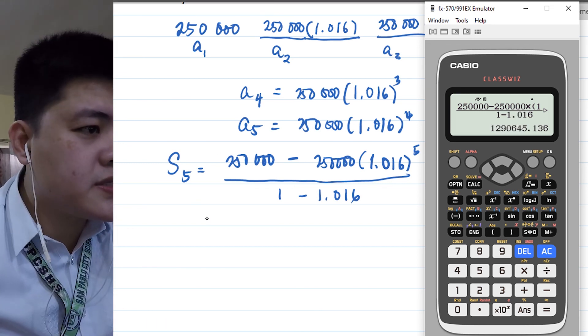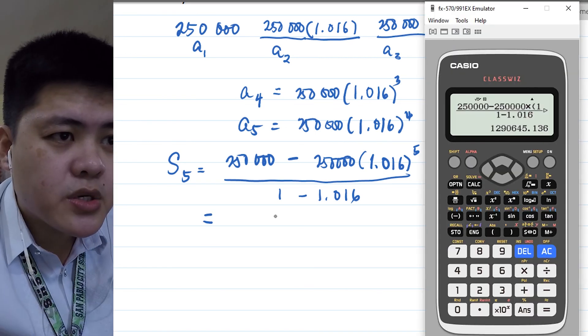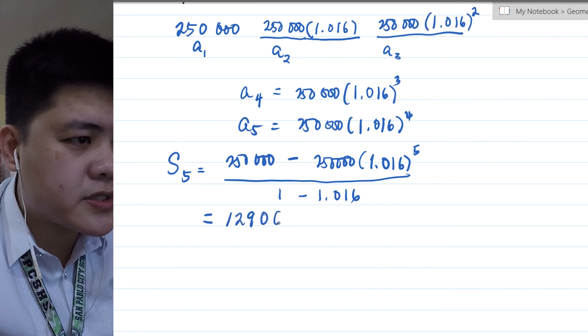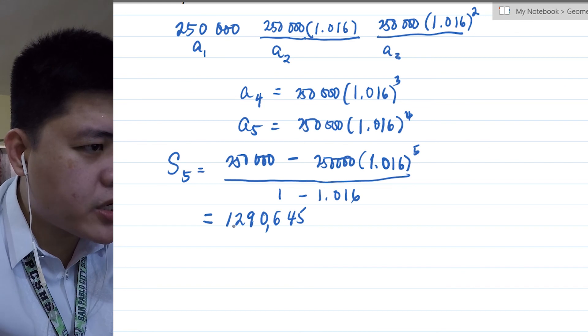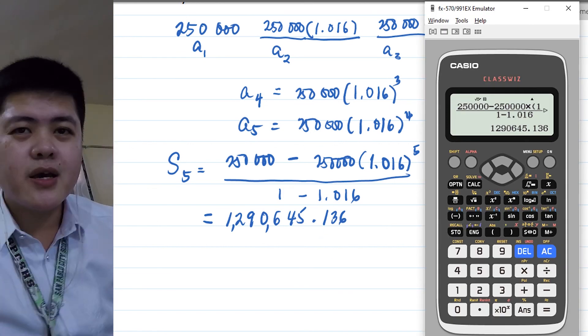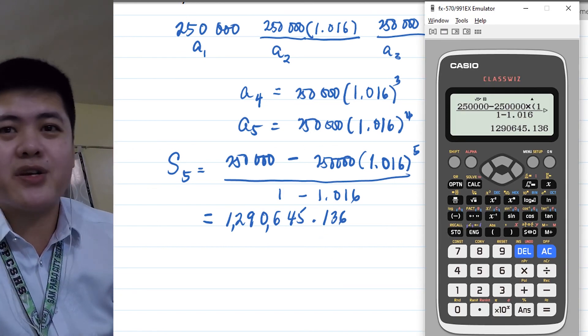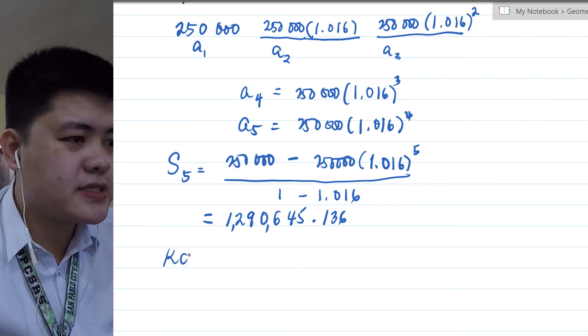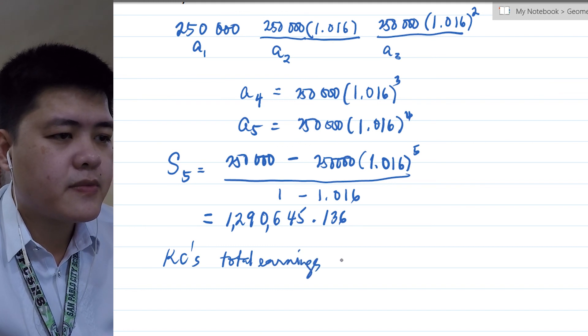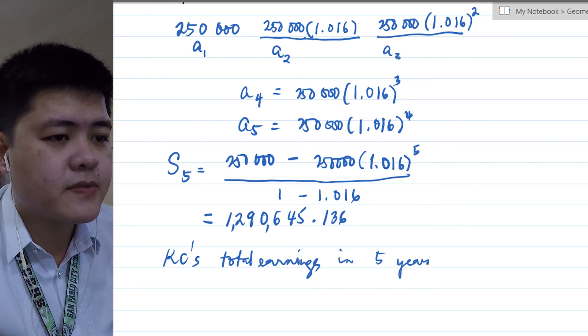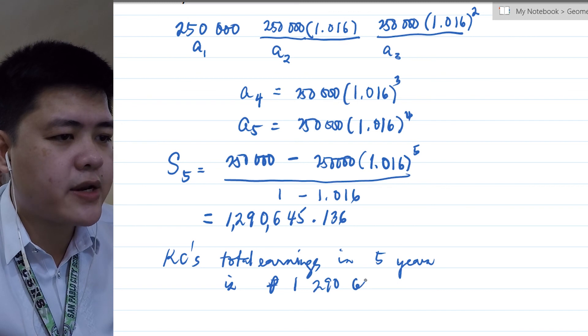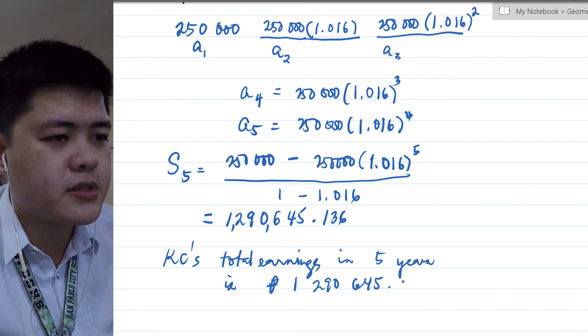So the answer is, let me count: 1, 2, 9, 0, 6, 4, 5. 1, 2, 9, 0, 6, 4, 5. So it's 1,290,645.136 pesos. Her total earnings for the 5 years, for the first 5 years. So Casey's total earnings in five years is 1,290,645.136.